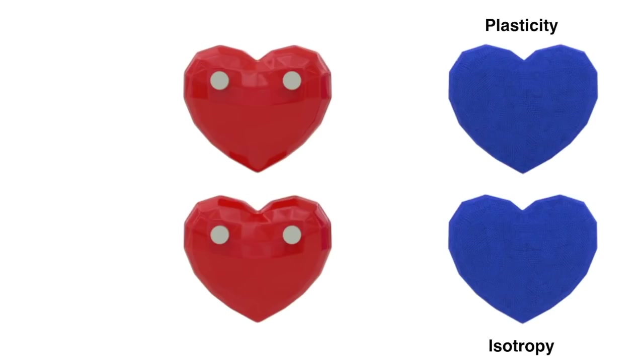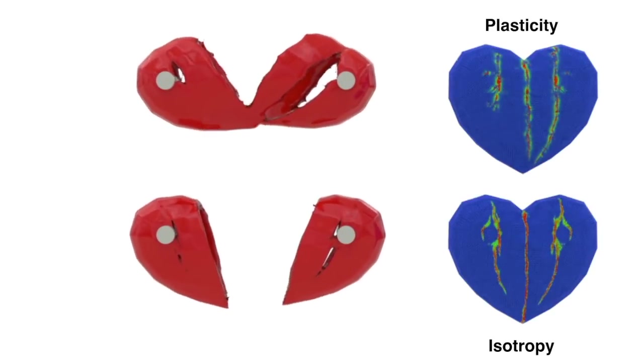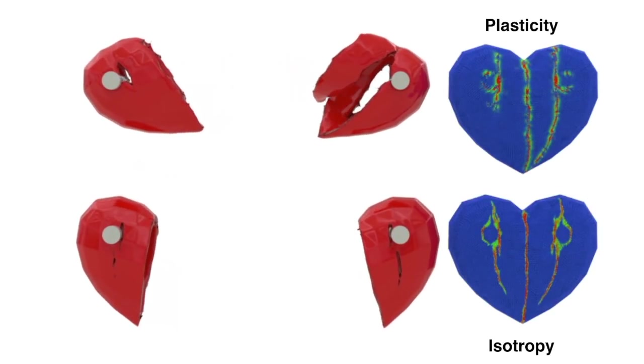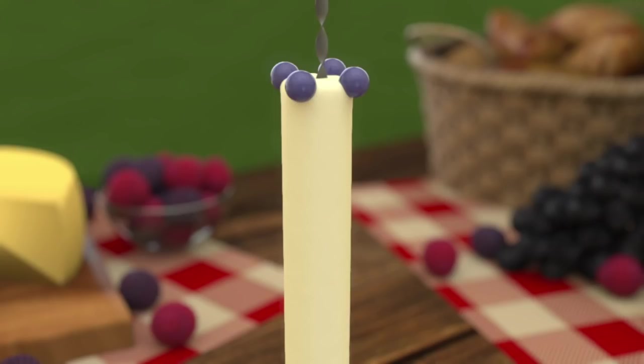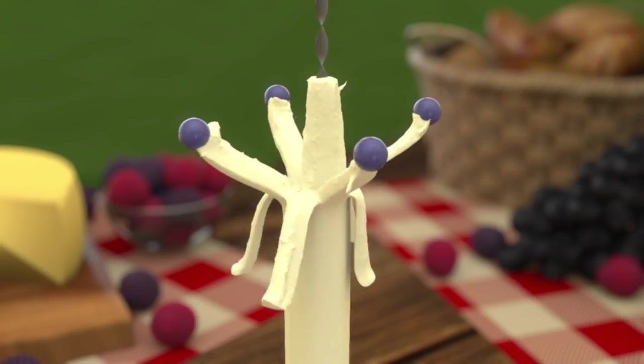Next, we pull apart a plastic toy heart using von Mises plasticity to demonstrate the natural support for plasticity within AnisoMPM. Now, we peel apart a cheese stick to show off the strong stringy fibers intrinsic to mozzarella cheese!